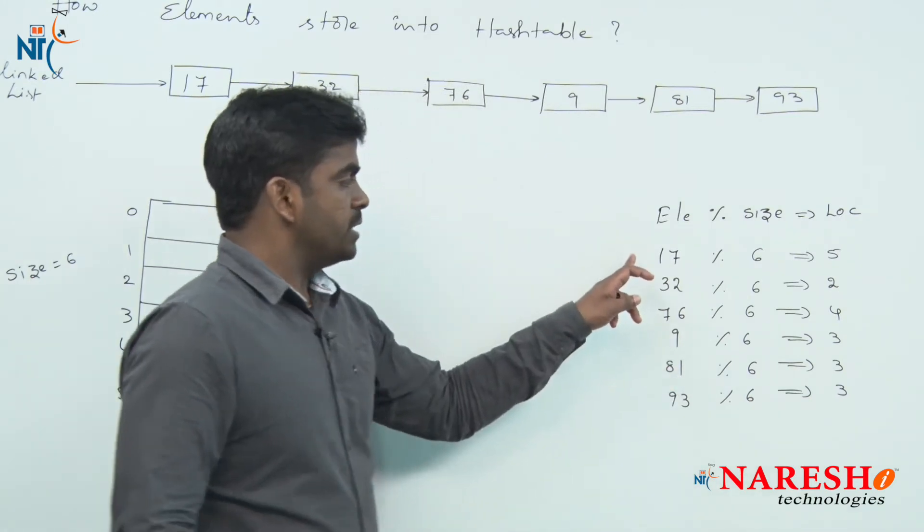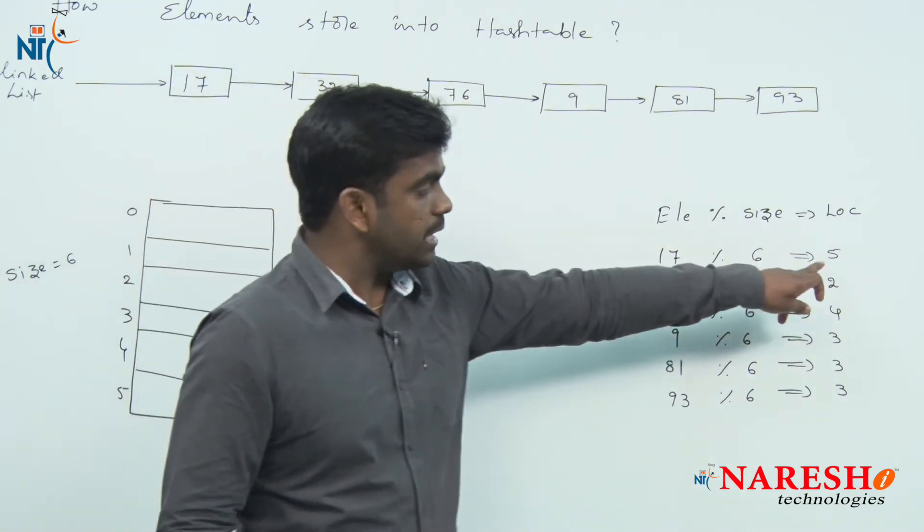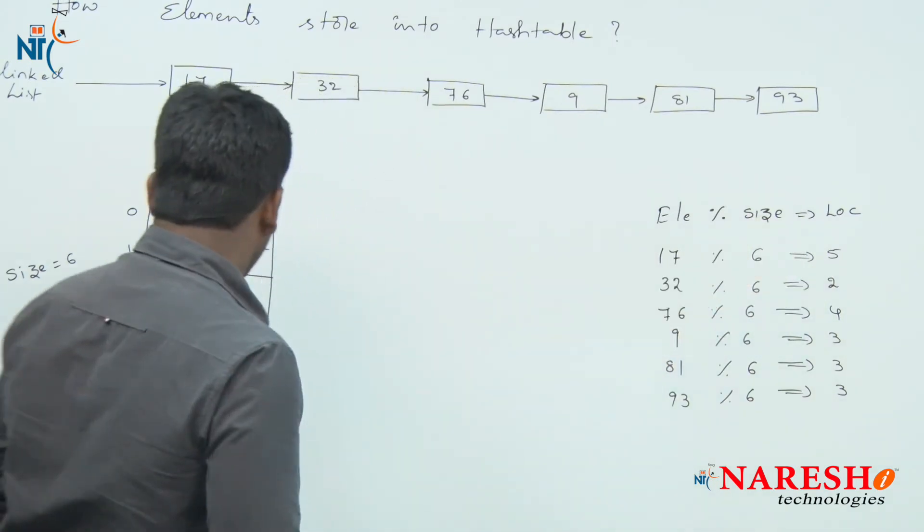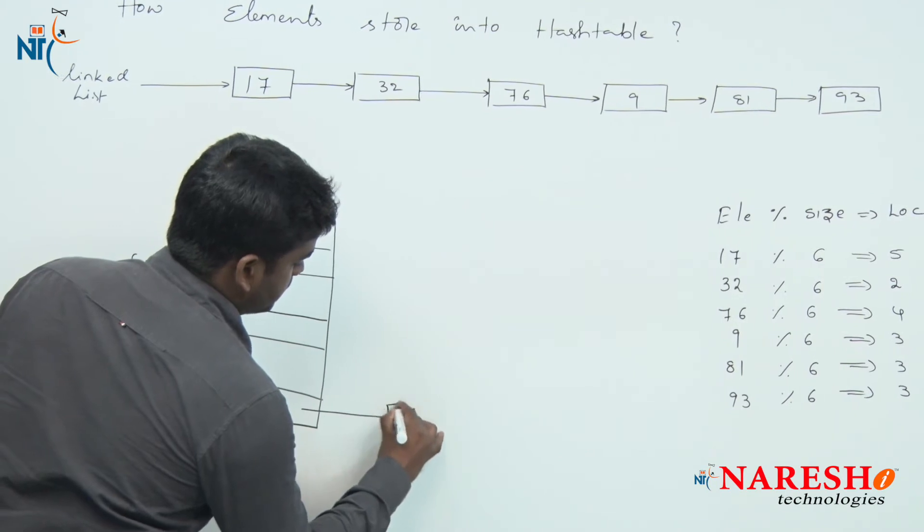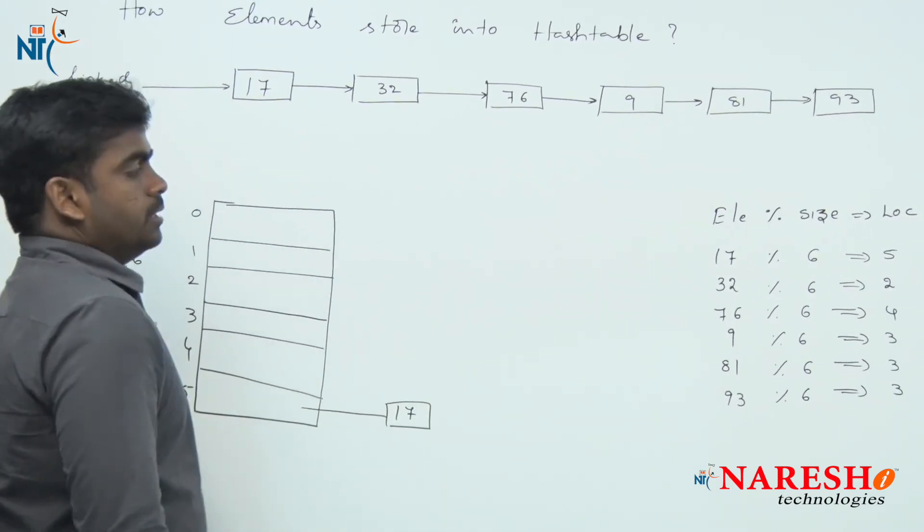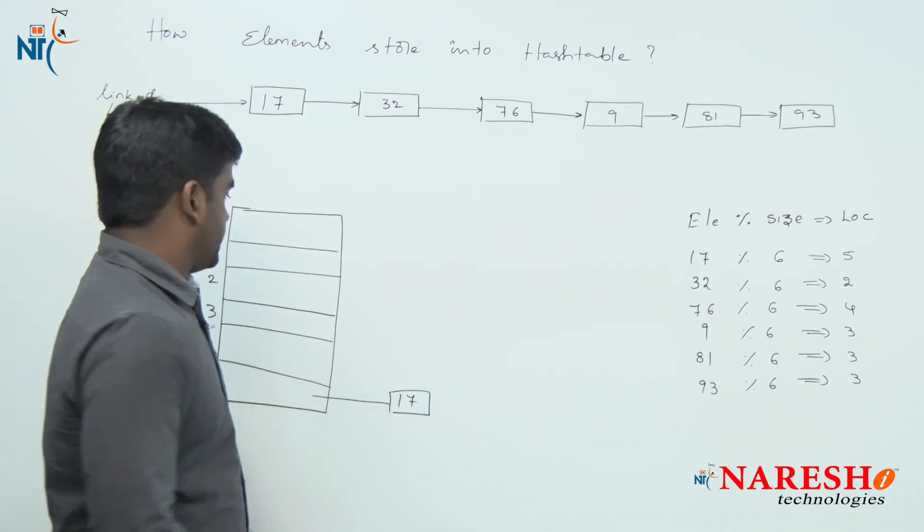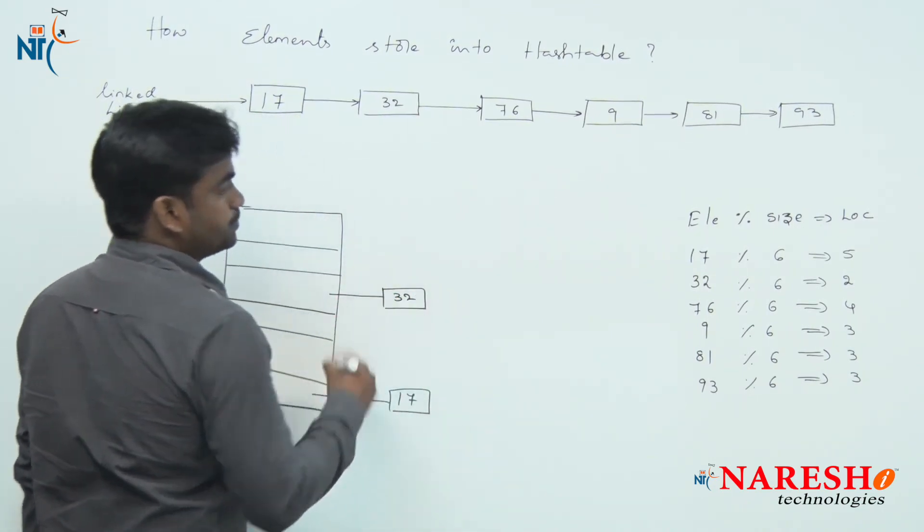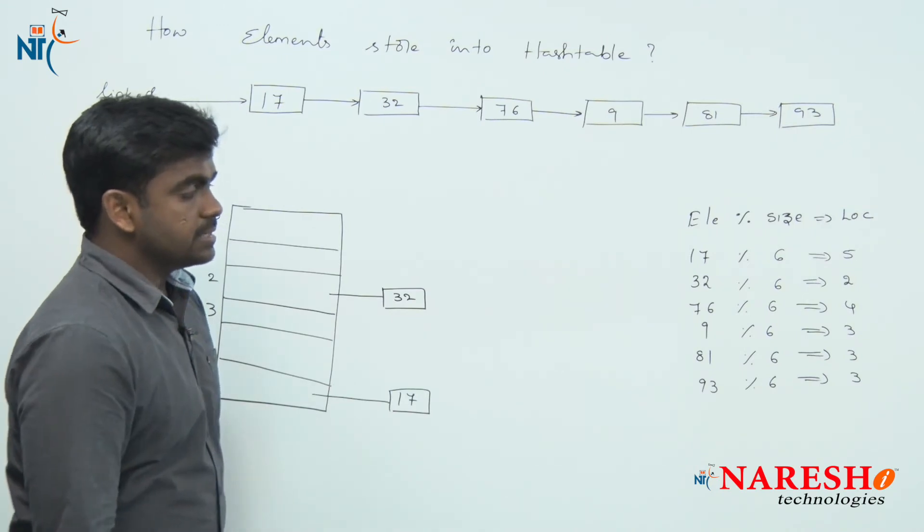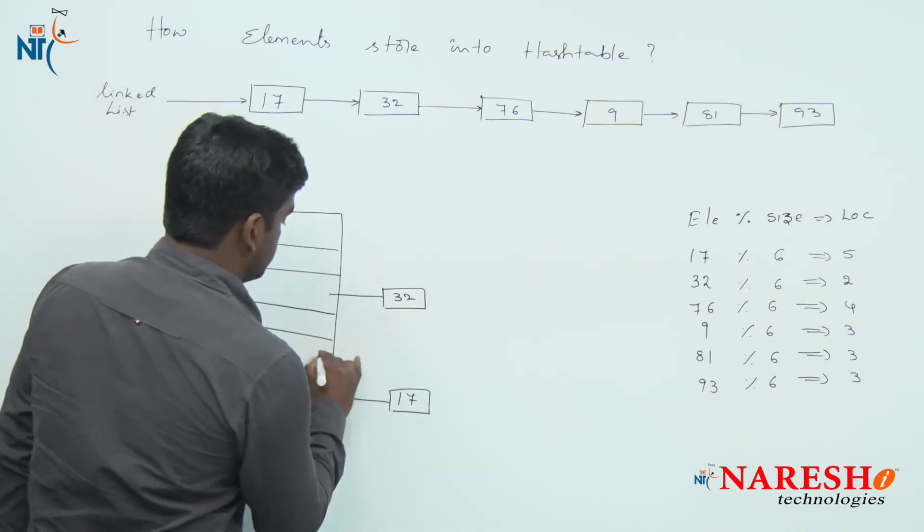First of all 17, you should connect from location 5. From the 5th location we need to connect 17. Next 32 is from the 2nd location, 32 is from 2nd location. Next 76 is from 4th location.